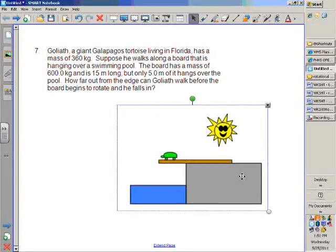Alright, so we got this turtle who's walking along this board. And it says it's supposed to walk along the board and see if we're swimming pool. It says the board has a mass of 600 kilograms. It's only 15 meters long, but only five meters of it hangs over its edge. How far out can the turtle walk before he begins to fall in?